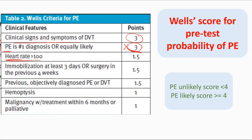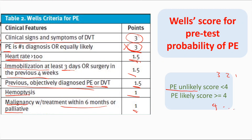Heart rate more than 100 gets 1.5 points. Immobilization for at least three days or surgery in the previous four weeks gets 1.5. Previous objectively diagnosed pulmonary embolism or DVT gets 1.5. Hemoptysis gets 1 point. Malignancy on treatment within the last six months or palliative also gets 1 point. If the total score is less than four, pulmonary embolism is unlikely. If the score is four or more, pulmonary embolism is likely.